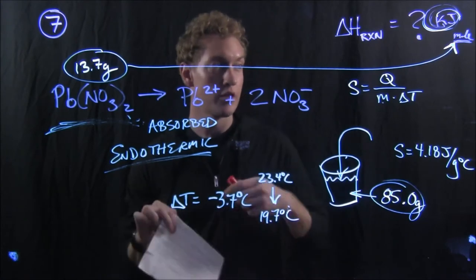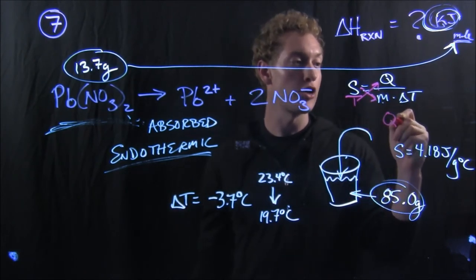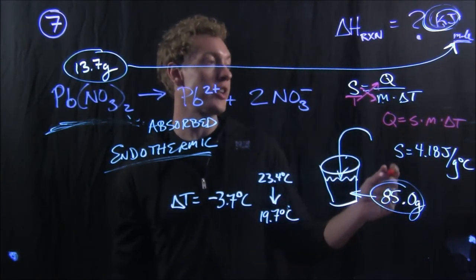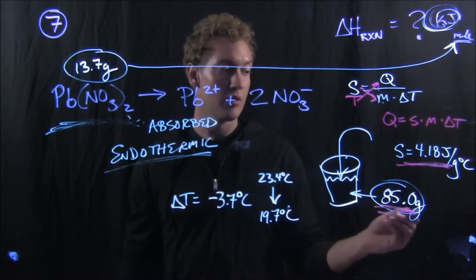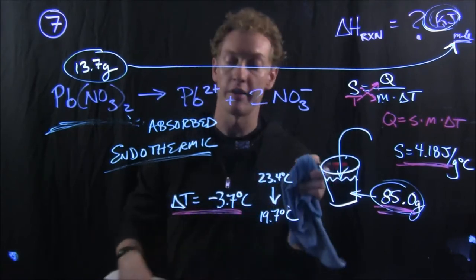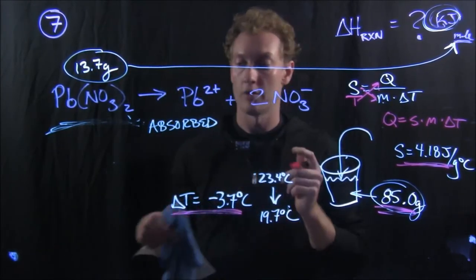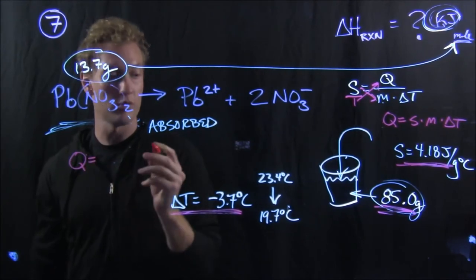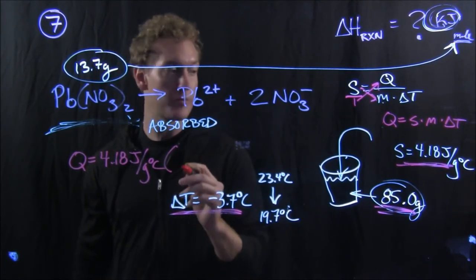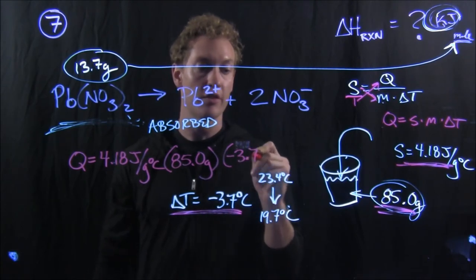So I need Q here. So I'm going to rearrange that formula. If I put this over 1 and I cross multiply that, I end up with Q equals S times M times delta T. And so if I want to calculate that Q value, I'll take my S, my M, and my delta T, and multiply them together, and I will get my Q value. I'll find the amount of energy that the water lost to this reaction.